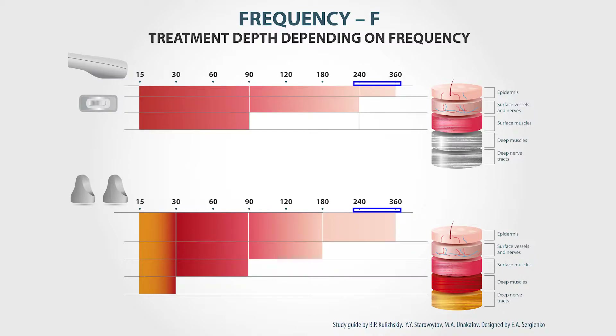When we use the built-in electrode, if we increase the frequency to 240 Hz or higher, the scanner signal will not go past the basal membrane.